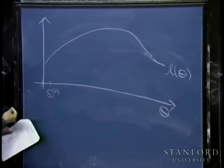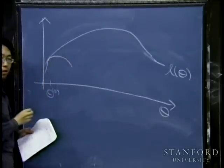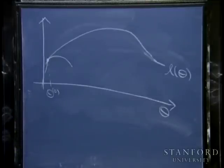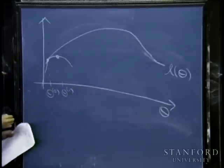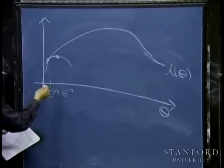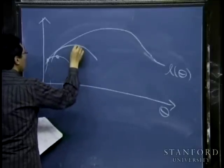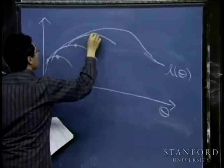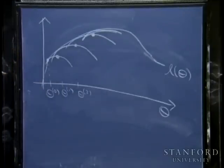Here's a useful picture. The horizontal axis is theta; the curve is the log likelihood L(theta) we want to maximize. The EM algorithm initializes at some theta_0, then repeatedly constructs a lower bound on L(theta) that is tight at the current theta, maximizes that lower bound to get the next theta, constructs a new tight lower bound, maximizes it, and so on — converging to a local optimum of the log likelihood.